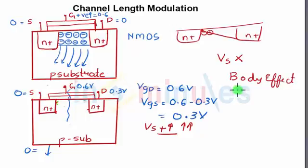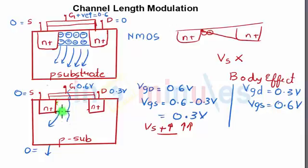We'll put the same analogy now. VGD is 0.3 volts and VGS is 0.6 volts. Therefore more holes would be repelled from here compared to here and we'll have more ions left behind here whereas we'll have less ions left behind here and we'll have the shape of our channel as something like this.